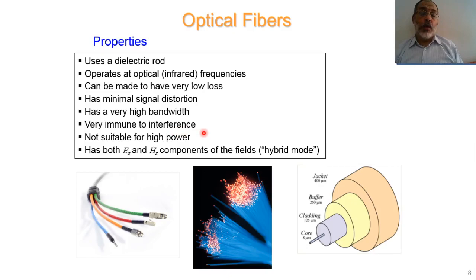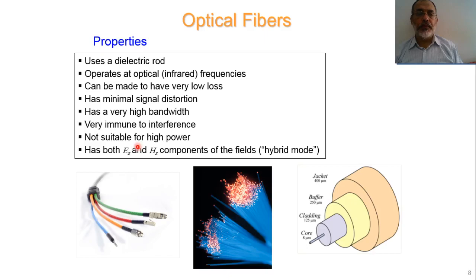The main problem with optical fiber is that it is not suitable for high power at all. Coaxial transmission lines can handle 10 or 100 watts, waveguides can handle kilowatts and megawatts, but for optical fibers we are talking about milliwatts — so they are not suitable for high power. The wave propagating inside optical fiber has both longitudinal electric and magnetic field components simultaneously, so we don't even have transverse electric or transverse magnetic — we are talking about hybrid modes combining both TE and TM.